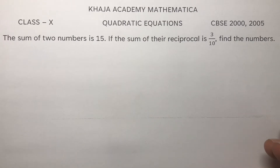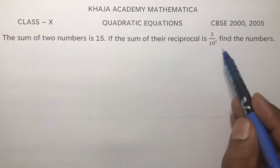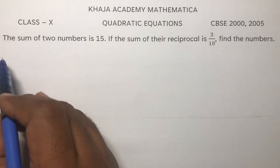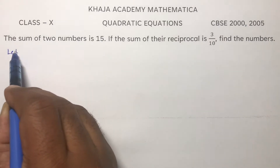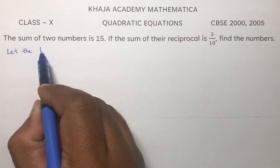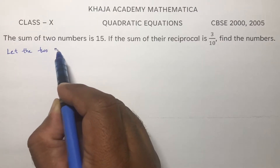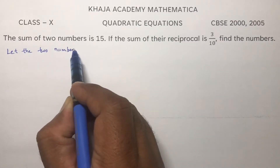The sum of two numbers is 15. If the sum of the reciprocals is 3 by 10, find the numbers. Here, let the two numbers be x and y.